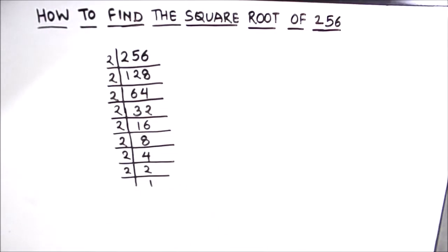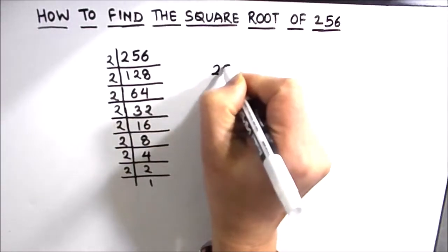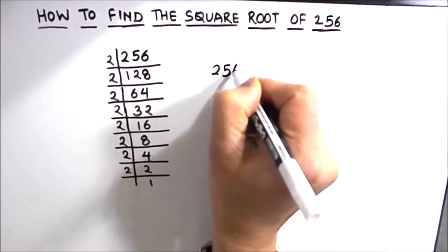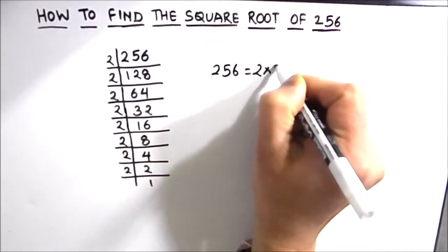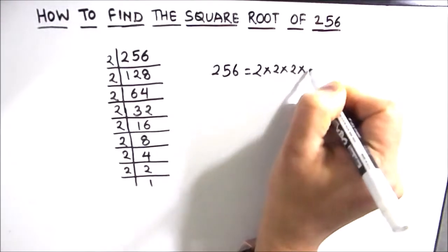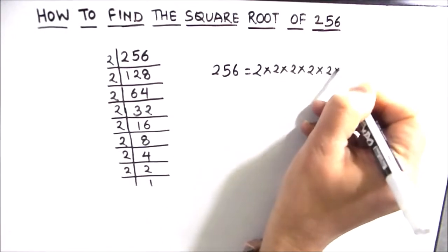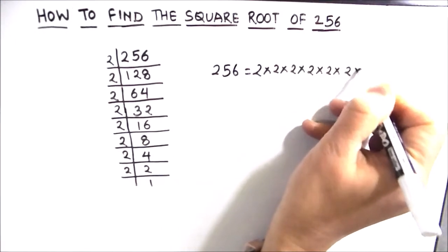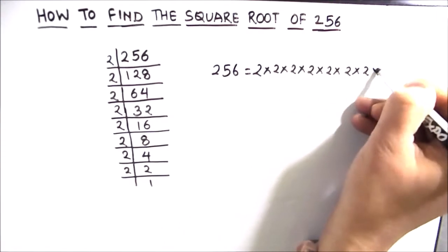So now our number is fully divided. We can write it as the product of the factors. So 256 is equal to 2 times 2 times 2 times 2 times 2 times 2 times 2 times 2.